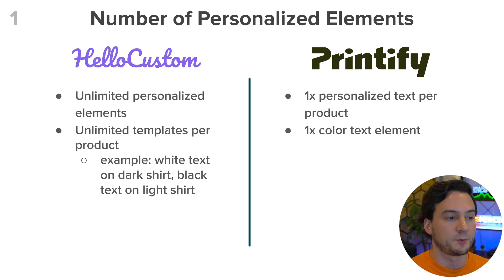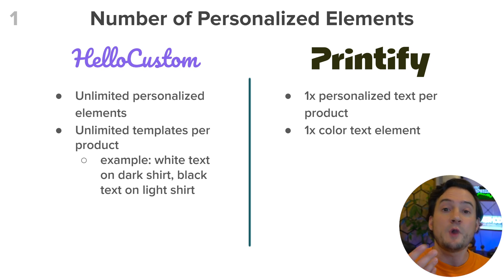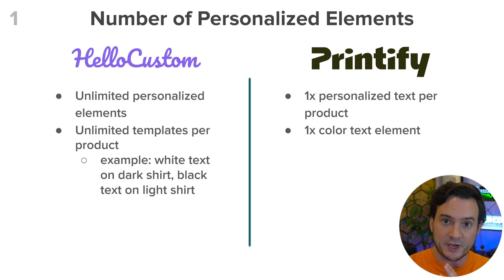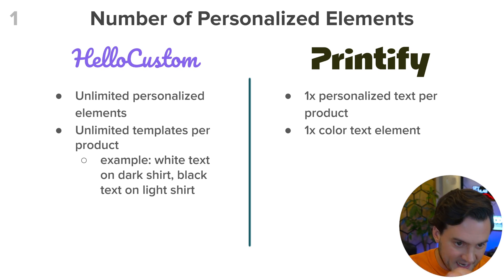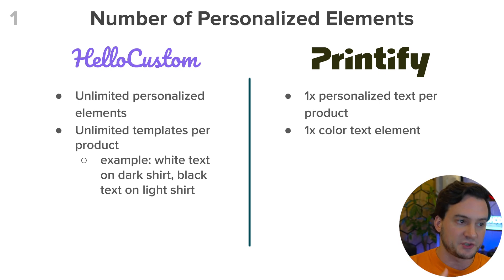To recap: Hello Custom supports unlimited personalized elements and also beyond just text. They also support unlimited templates per product. So for instance, if you have a product listing where you offer a white shirt with black text and then the inverse in the same listing — kudos to Printify for making that easy with their 'separate design for this color' button — Hello Custom supports that as well, giving you white text on a dark shirt and black text on a light shirt.